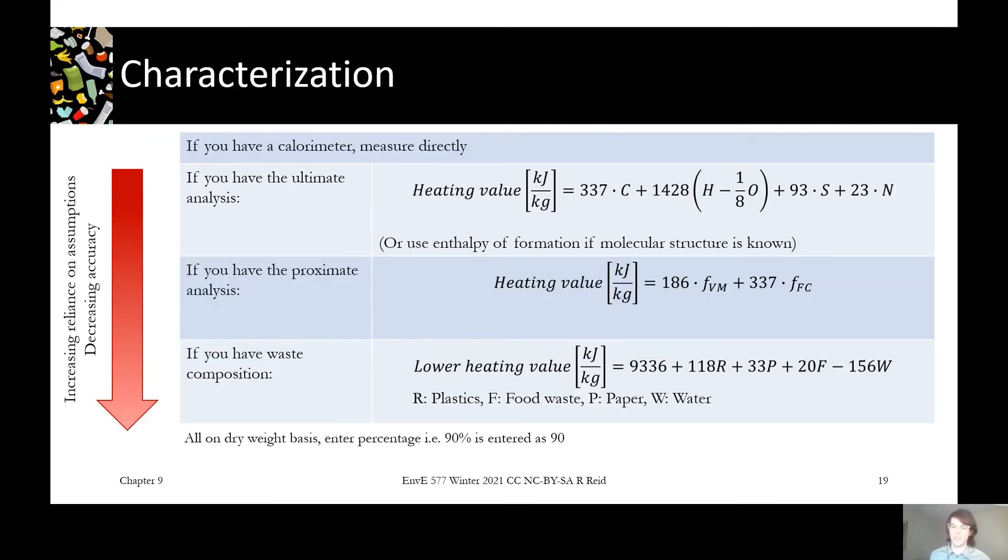So you might be saying to yourself, heating values sound great, but how do you actually determine the heating value of something? There's a bunch of methods we can use. I've arranged them in the table on screen here from the most direct accurate way to measure it down to progressively lower accuracy approximations based on what information we have available. At the top, the best thing you can do is to directly measure the heat that's actually released by actually burning it in conditions similar to your thermal treatment reactor. You can do that in a device called a calorimeter, very similar to the way that calories are measured for food.